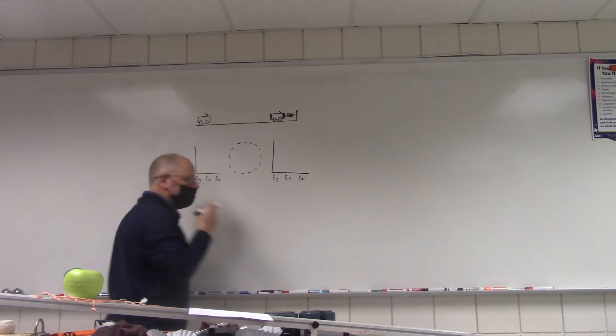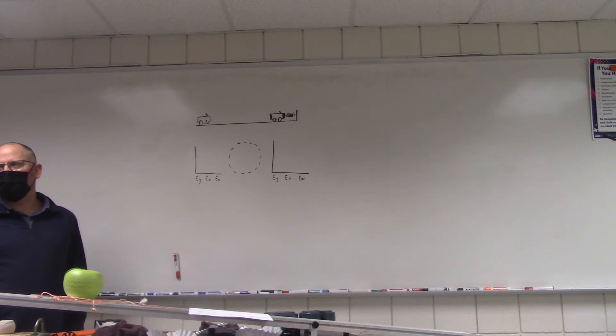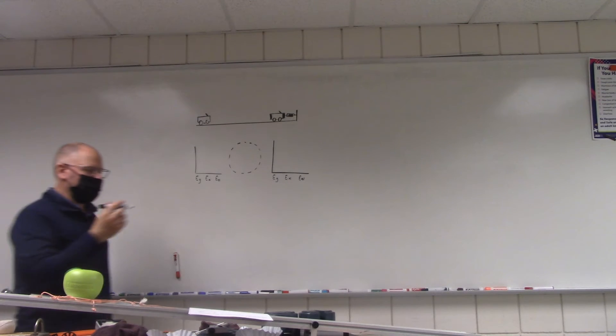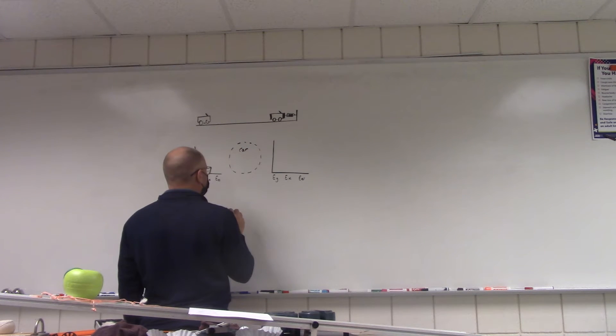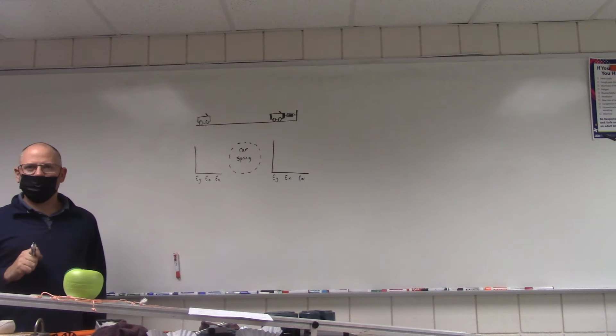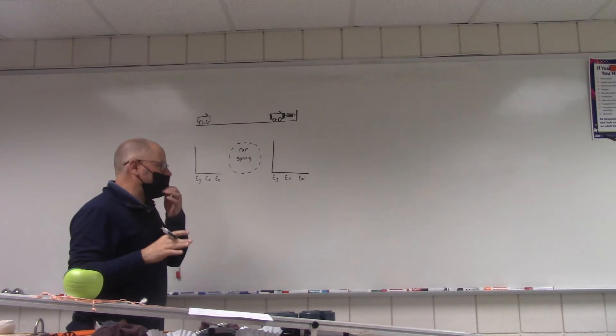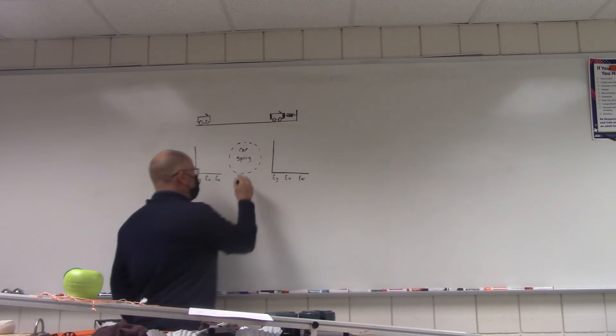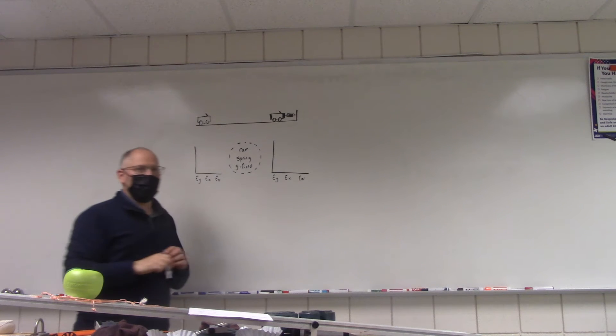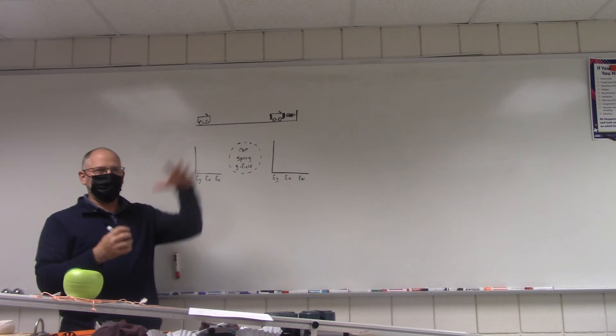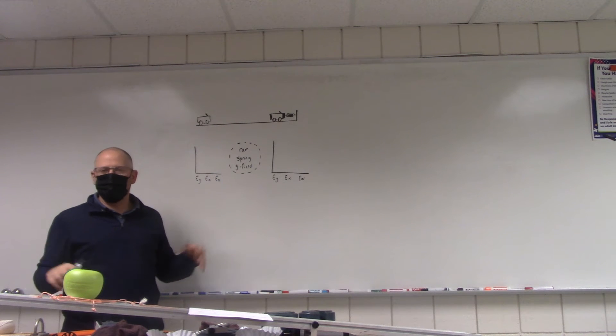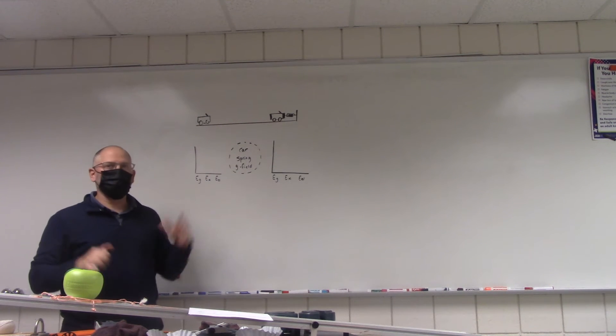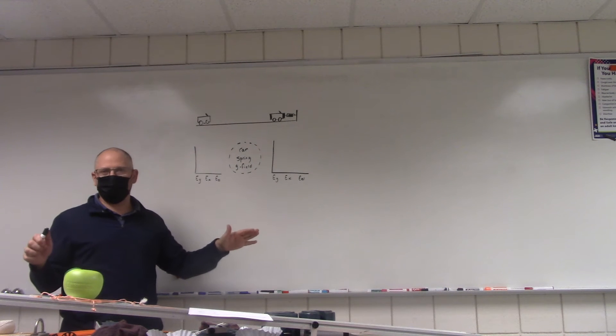This is my system. Tell me something you think is probably in the system. The cart? Yeah, the cart is probably in the system. Spring. What else might be in the system? Earth. The G field of course. The gravitational field may be in the system, or you could say the Earth is in the system. That's the same representation. The gravitational field is caused by the cart and the Earth interacting. Those are both acceptable to me.